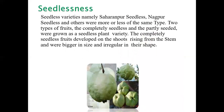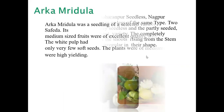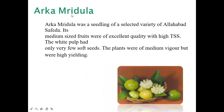Seedless varieties include Saharanpur Seedless and Nagpur Seedless. Seedless fruits are of two types: completely seedless and partly seedless. Completely seedless fruits develop on shoots rising from the stem and are bigger in size but irregular in shape. The variety Arka Mridula is a selection from Allahabad Safeda; fruits are medium in size, excellent quality with high TSS, white pulp with soft seeds, and plants are medium vigor but high yielding.